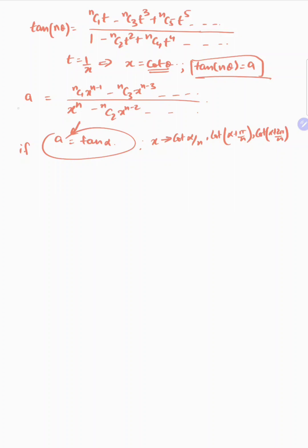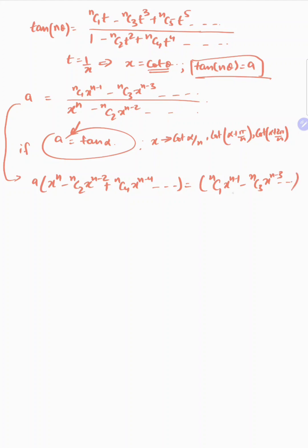Now what I will do is write this polynomial in a linear/factored fashion. Taking the even-powered terms on one side: A·x^n minus nC2·x^(n−2) plus nC4·x^(n−4) and so on, equals nC1·x^(n−1) minus nC3·x^(n−3) and so on.